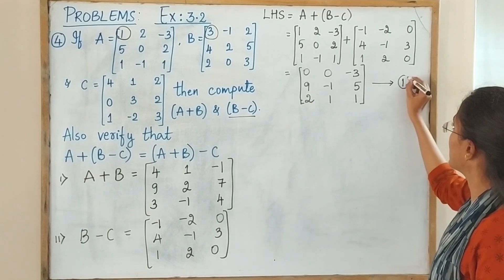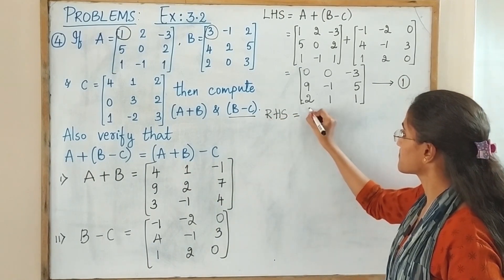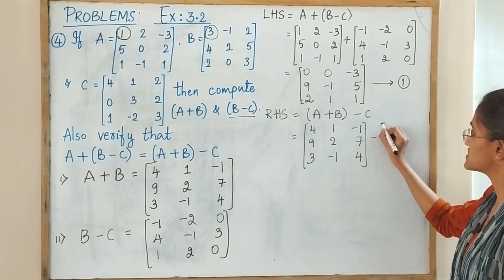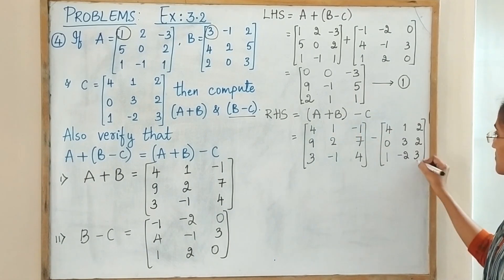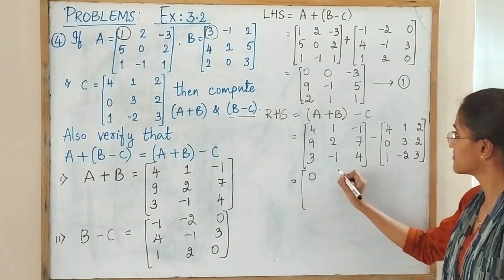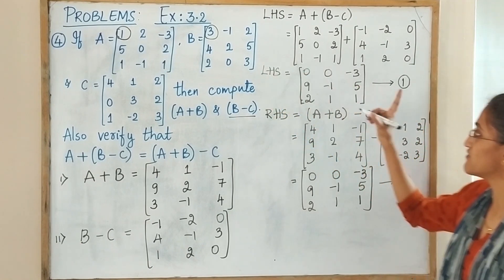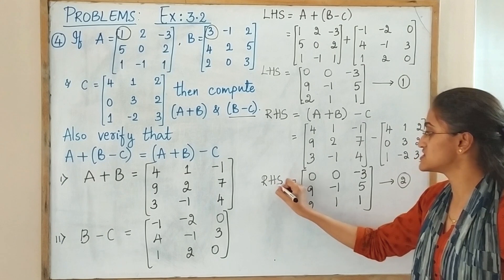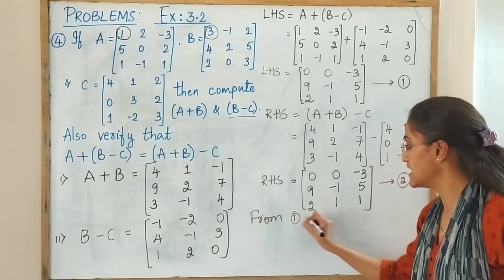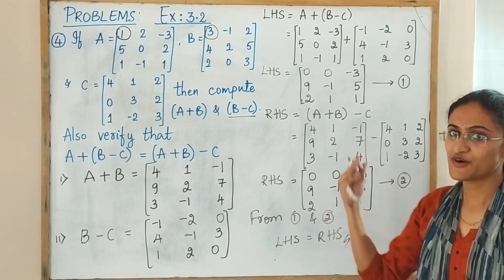Now our job is to find A plus (B minus C) and (A plus B) minus C and check whether they are equal. For LHS, take matrix A and add it to the matrix B minus C already found — call this equation 1. For RHS, take matrix A plus B found earlier and subtract matrix C — call this equation 2. Since equations 1 and 2 are equal, LHS equals RHS and hence verified.